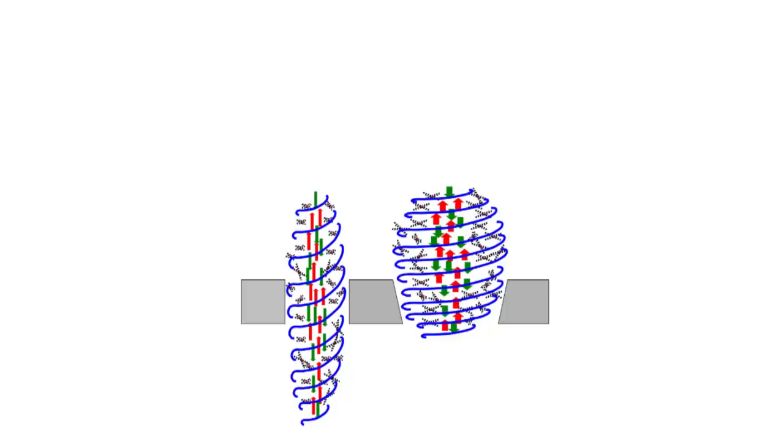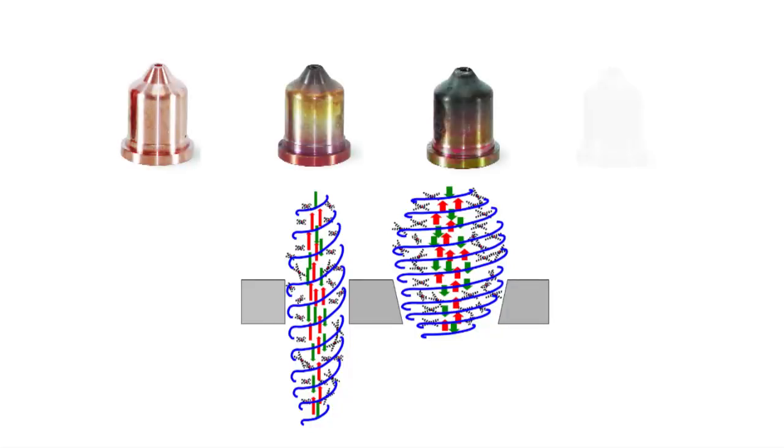As the nozzle is used, it takes the brunt of the heat during the plasma process. As a result, the orifice eventually widens and the arc can become wider and less constricted.